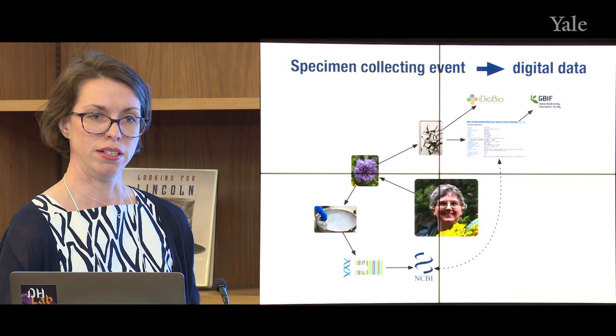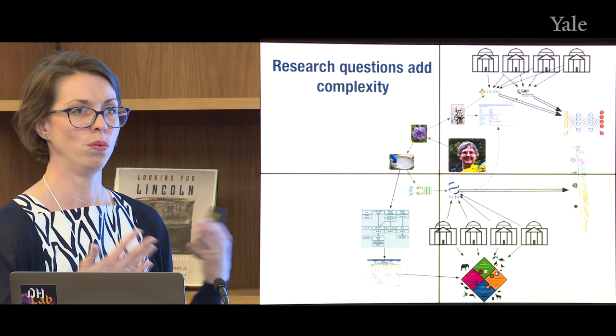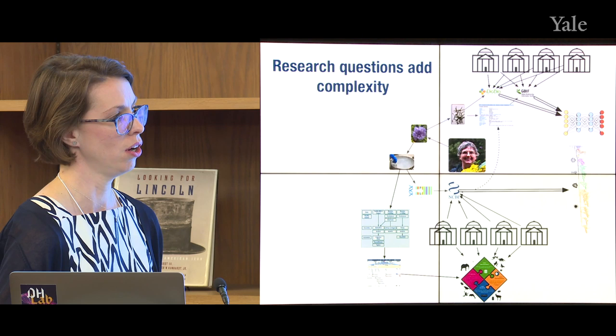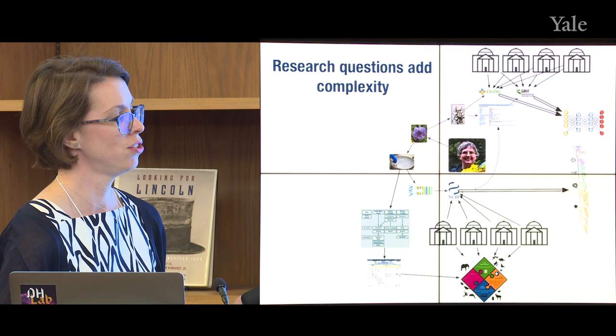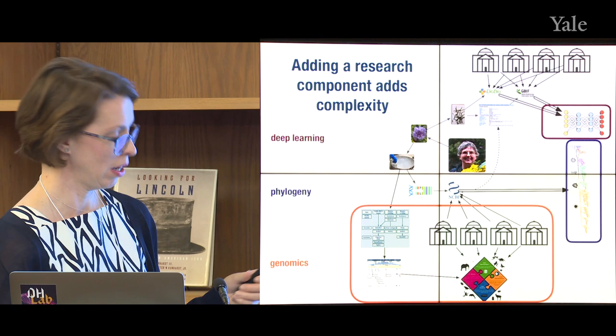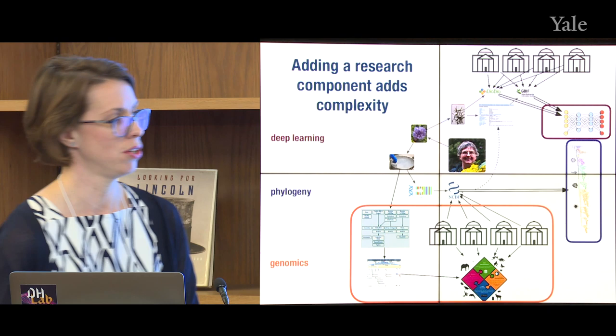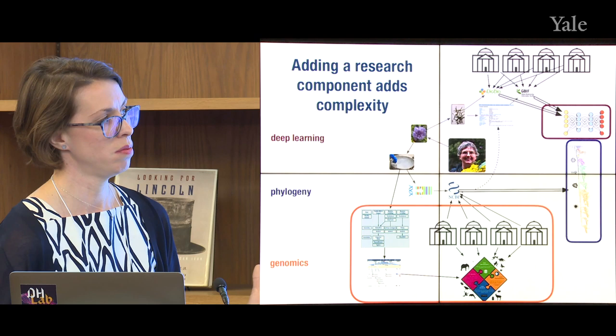That's all before any research question — that's just documenting that we collected a specimen and put it in the right places. In order to generate the deep learning models that Alex will talk about later, we need data from lots of different museums — specimen records, locality information, and images from all over. In order to build a phylogeny, in this case a paper we're about to publish with 256 species in the sunflower family, we sequenced 1,000 genes for all 256 species.